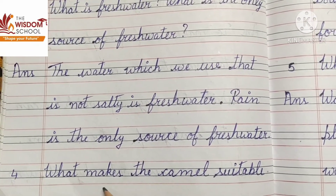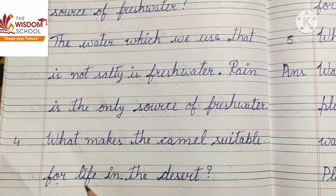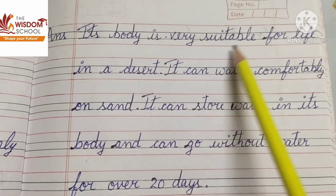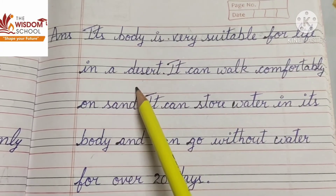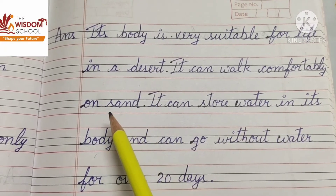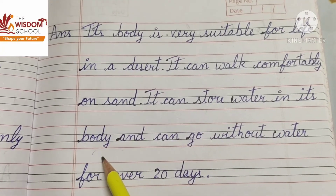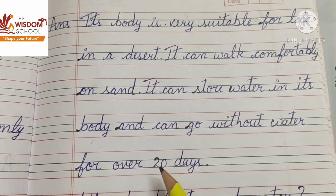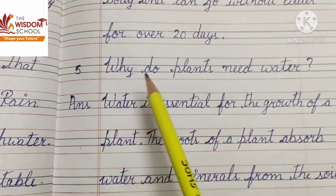Fourth one: what makes the camel suitable for life in the desert? Camel kis tarah se suitable hota hai ki woh desert mein survive kar sake — its body is very suitable for life in a desert. It can walk comfortably on sand. It can store water in its body, and can go without water for over 20 days.